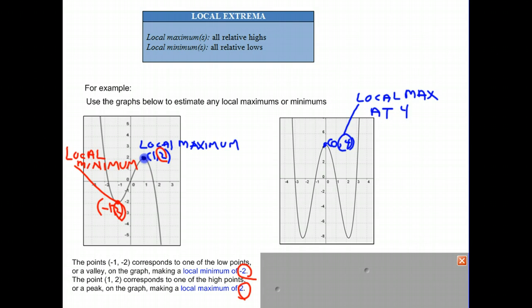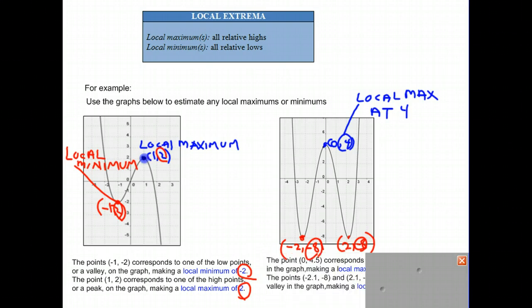You'll notice there are two local minimums. One is over here at negative 2, negative 8, and therefore negative 8 is considered to be a local minimum. And there happens to be one on the other side at 2, negative 8. So we also have a local minimum at negative 8.